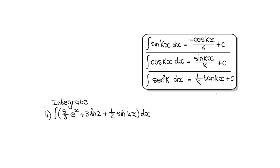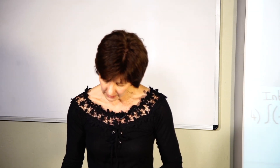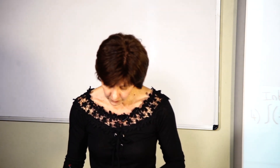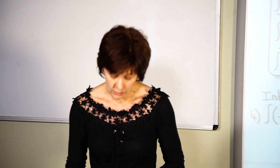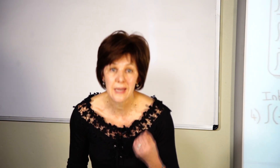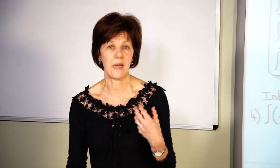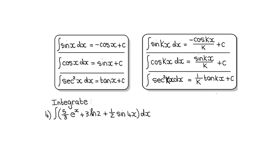Before the next example, I want to introduce another set of rules you must be able to use. On your formula sheet they may give you the rules for integrating sin kx, cos kx, and sec squared kx. But it might be that they only give them with x, not kx. So let's look at both situations — if they give the kx version you can use it directly, but if they only give x you'll need to adjust.